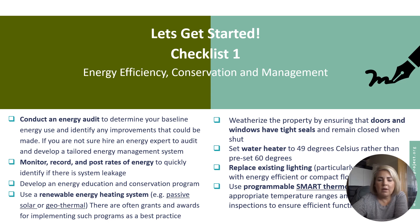Checklist one looks at your energy efficiency, conservation and management. For example, it covers how to conduct an energy audit, how to monitor, record and track rates of energy use, how to look at different systems, how to make sure you are using existing resources and infrastructure such as doors and windows correctly and how to improve them. It also covers how to moderate water sustainability and replacing different lighting, and programs such as smart thermostats.